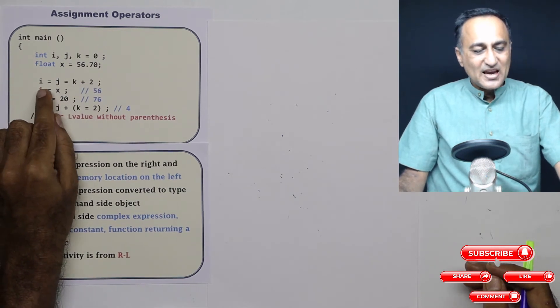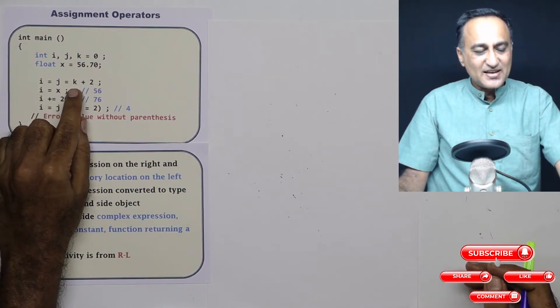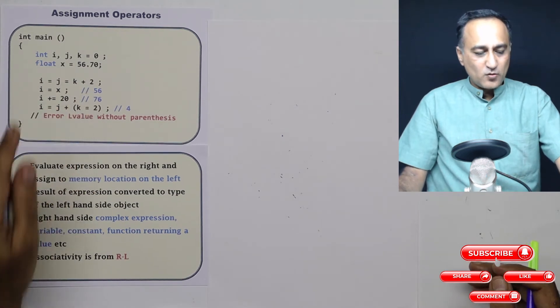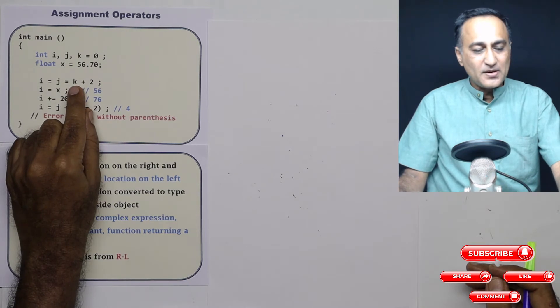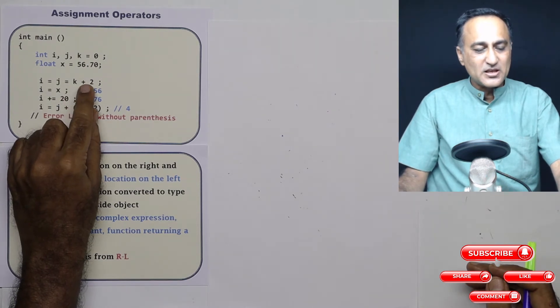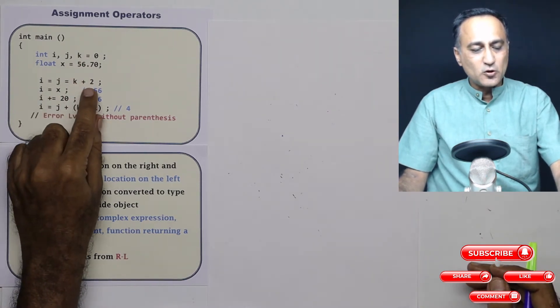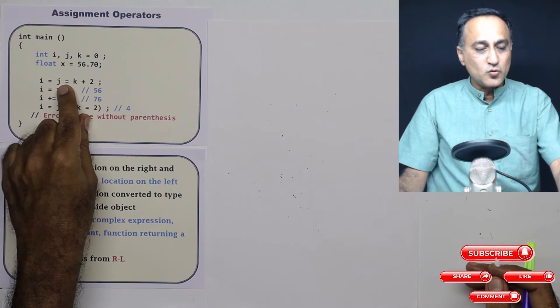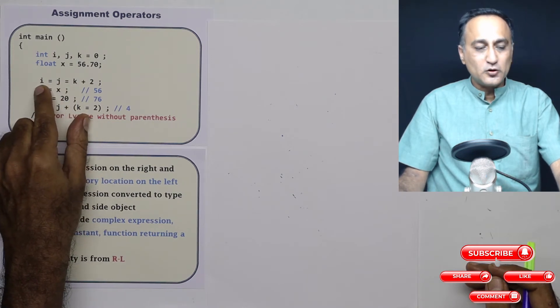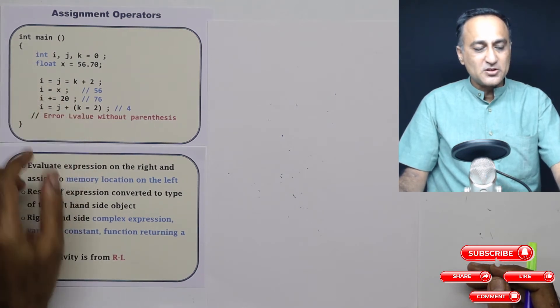Here what I have done is i is assigned j, j is assigned k plus 2. Now the associativity is clearly from right to left. So first k plus 2 on the right side becomes 0 plus 2. The value of k does not change. So 0 plus 2 is 2, then j becomes 2, i also ends up becoming 2.